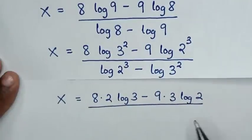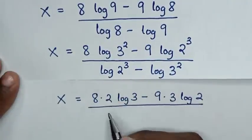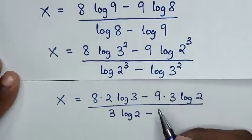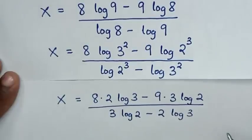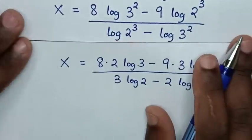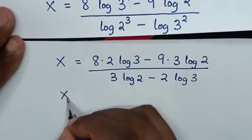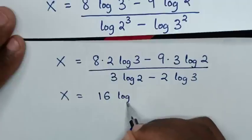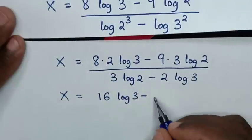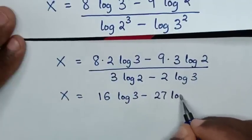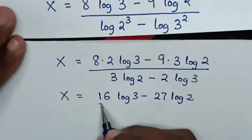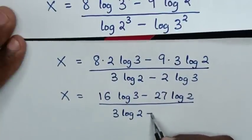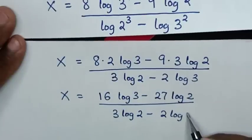Then, over: this power of 3 will move to the base, so it will be 3 log of 2, minus this power of 2 will move to the base, so it will be 2 log of 3. Then, in the next step, x is equal to: this times this is 16 log of 3, minus this times this is 27 log of 2, then over 3 log of 2 minus 2 log of 3.